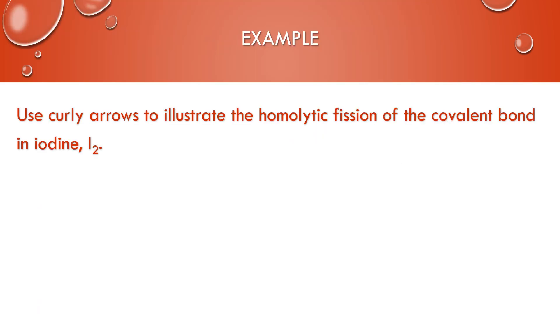Okay, so this example says to use curly arrows to illustrate the homolytic fission of the covalent bond in iodine. So we have our two I's and the curly arrows we need to make sure that we're showing just a single barbed arrow because only one of the electrons is going to either iodine and then you're left with two iodine radicals. And we can summarize that as I2 goes into two iodine radicals.